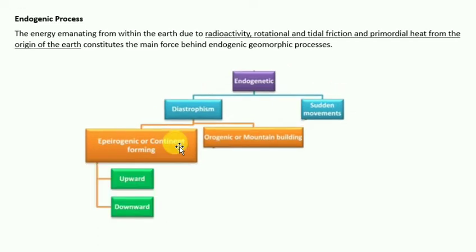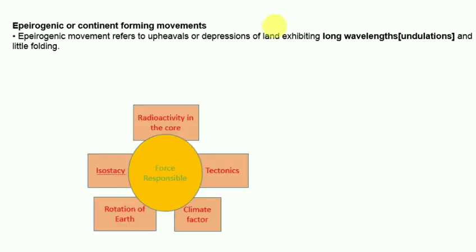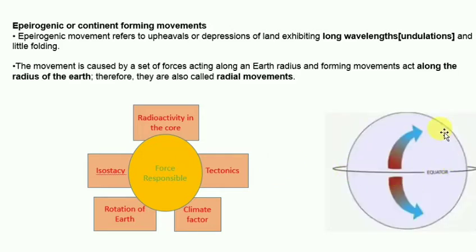The broad central parts of continents called cratons are subject to aporogeny, such as those contributing to isostasy and rifting in the lithosphere. Apodogenic or continent-forming movements act along the radius of the earth, and therefore they are called radial movements.